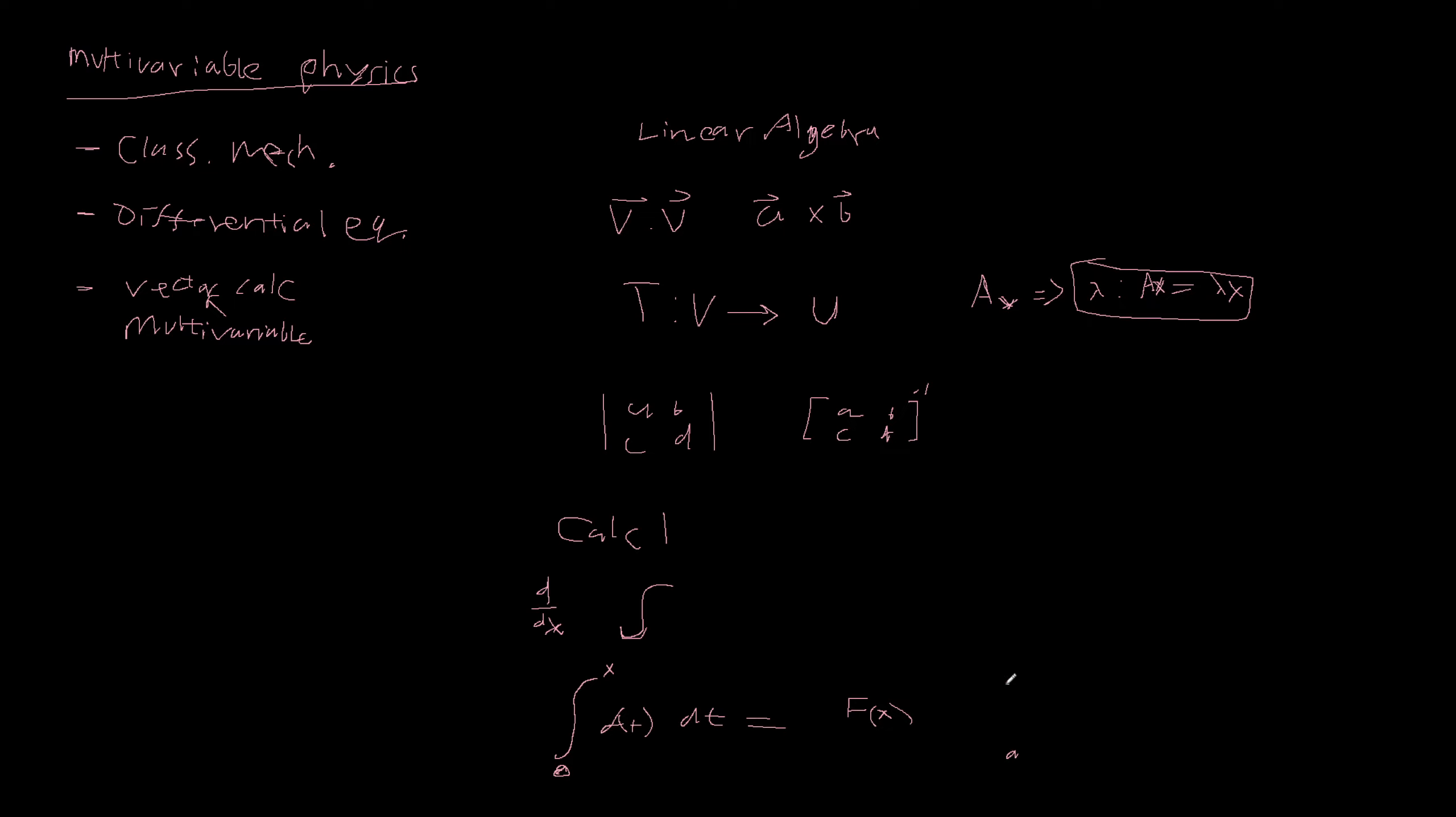The integral from A to B of F prime of T DT, then this is equal to F of B minus F of A. You should know this. This becomes kind of, we'll revisit this when we do line integrals in higher dimensions.